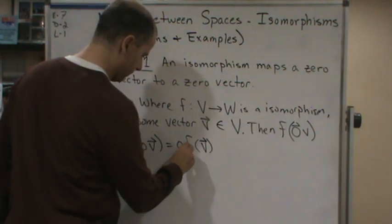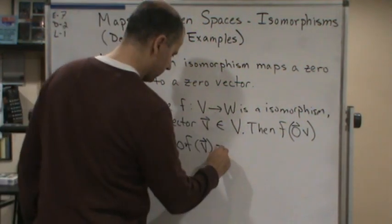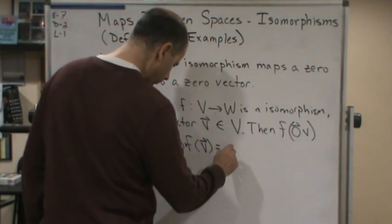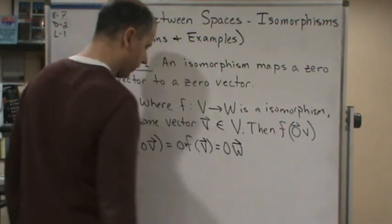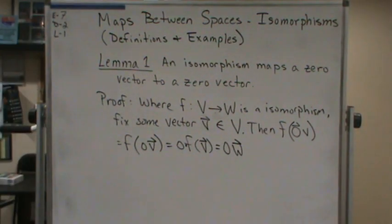Of course, this is multiplication. And then this is going to equal zero of the vector W.